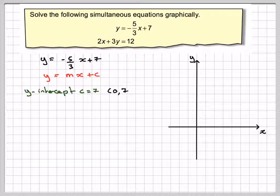If we draw out a set of axes, we need at least 7 in this direction, and we need to mark on the point 0, 7, which is going to be there.